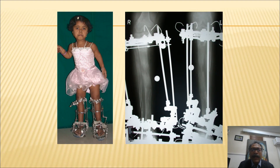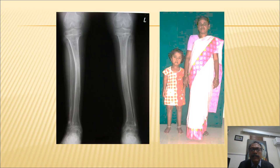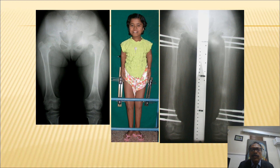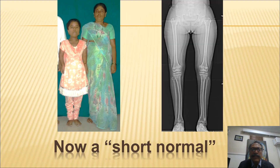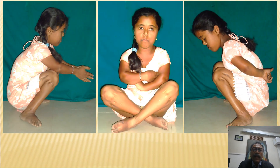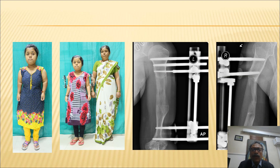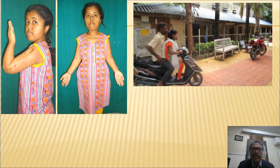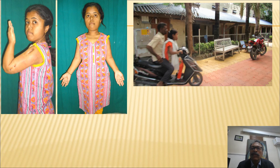We can perform different strategies such as bilateral tibial lengthening followed by bilateral femoral lengthening, as in this young lady who had tibial lengthening of an extensive 12 centimeters and further lengthening with LRS fixators. She became a short normal, studied and became an engineer, found gainful employment with the electricity board, and now functions as a perfectly normal individual — riding her own two-wheeler to work and ferrying her parents about.